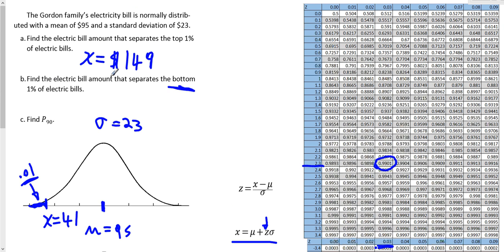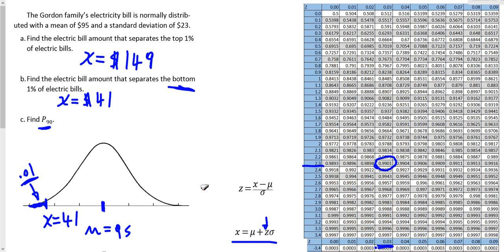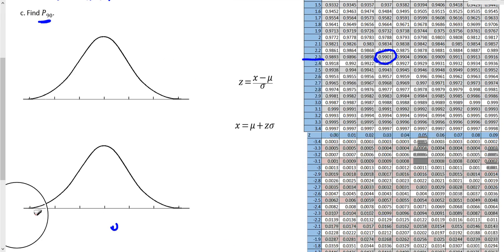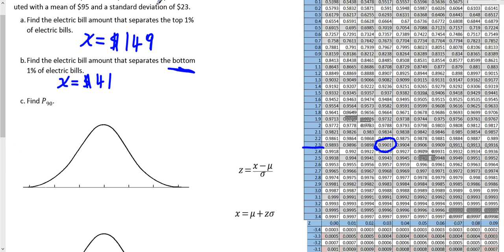So for the second question — find the electric bill that separates the bottom 1% from the top 99% — the answer is $41. Only 1% of the Gordon family electric bills are less than $41, but 99% are more than $41. Now here's the last question: find the 90th percentile. The 90th percentile separates the bottom 90%. Whenever you see the notation P-sub-k, you're looking for the value that separates the bottom k percent from the top (1 − k) percent.